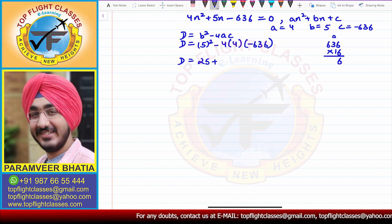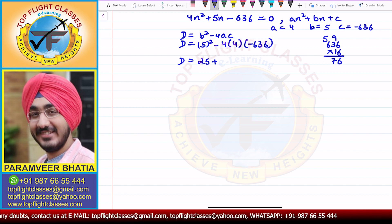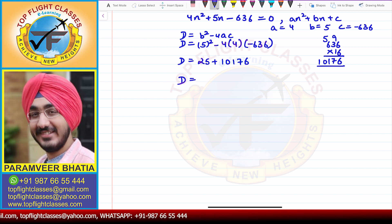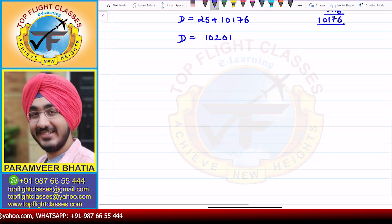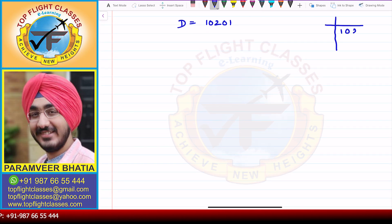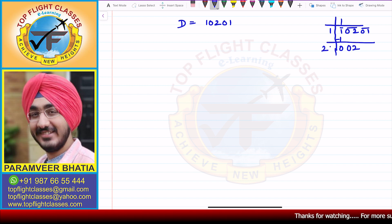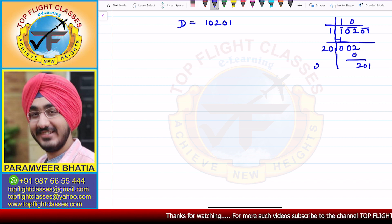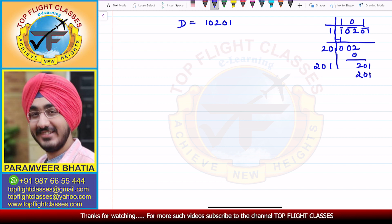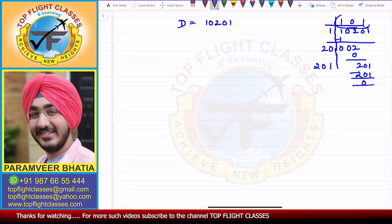Calculating: 16 into 6 is 96, 16 into 3 is 48, 48 plus 9 is 57, and 16 into 6 is 96 plus 5 is 101. So we get 10176, and D comes out to be 10201. Taking the square root of 10201: working through the calculation, root D equals 101.